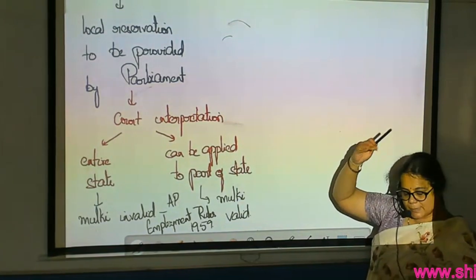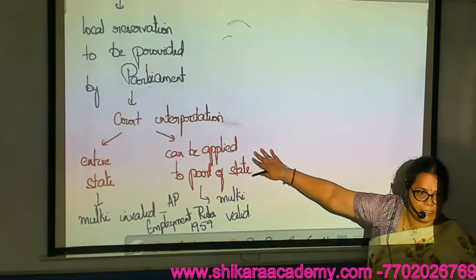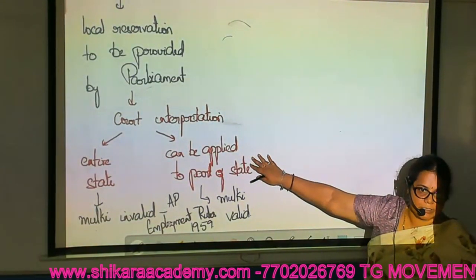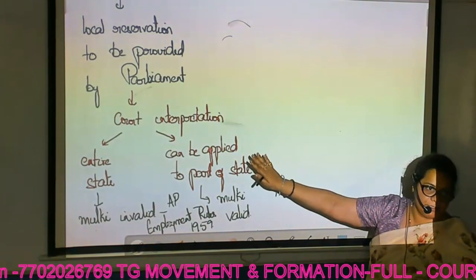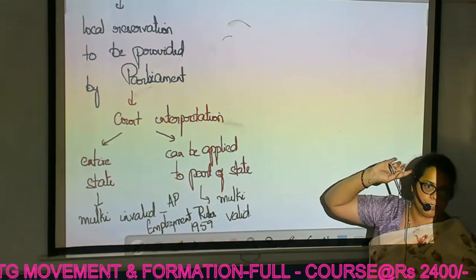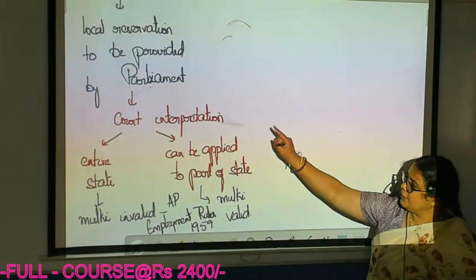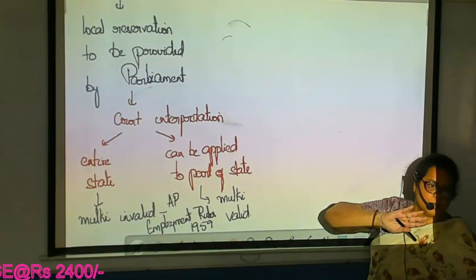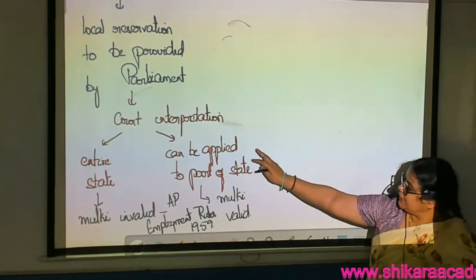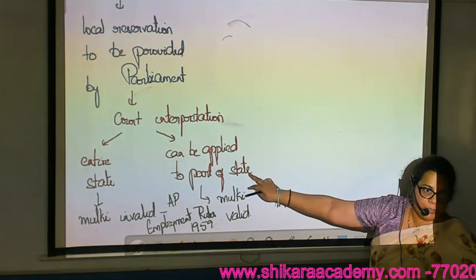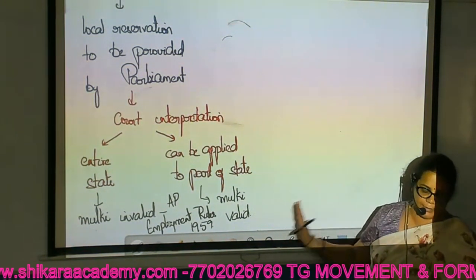This is basically in reference to AP Employment Rules 1959. Wherever the court interpreted 'entire state,' they declared AP Employment Rules 1959 invalid. Wherever the court interpreted that it can be applied to one part of the state, the rules become valid. If the judge interprets as entire state, local reservation in Telangana becomes invalid. If the judge interprets it can be applied to part of the state, local reservation for Telangana becomes valid. This is the first article.